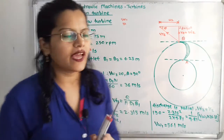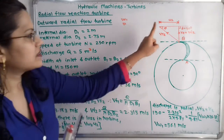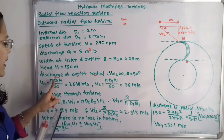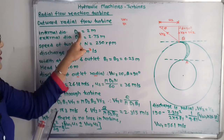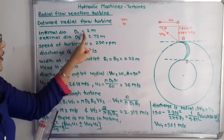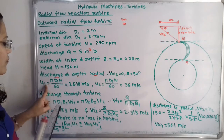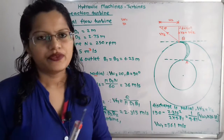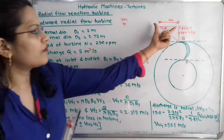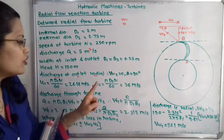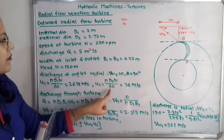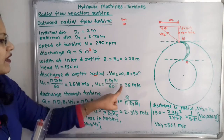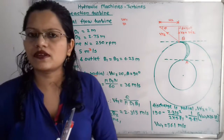We can calculate U1 using the formula pi × D1 × N / 60. With D1 and N known, we get U1 = 26.18 meters per second. Similarly, U2 = pi × D2 × N / 60. With D2 and N known, we get U2 = 36 meters per second.